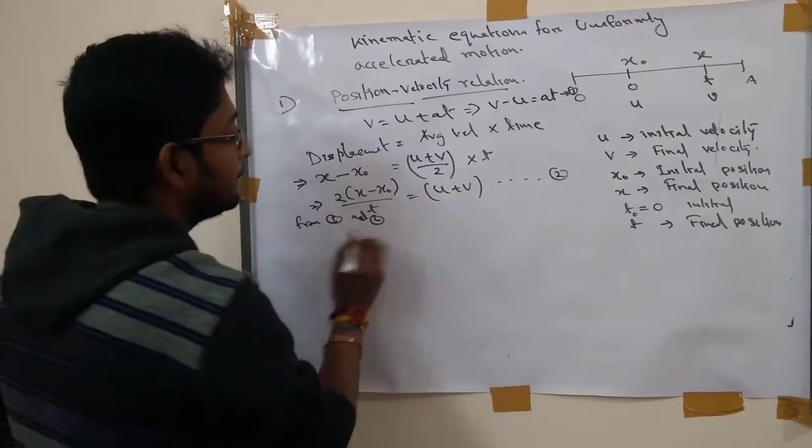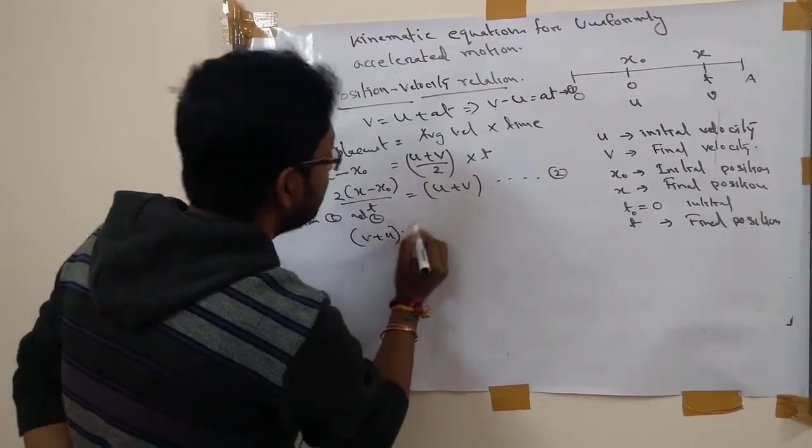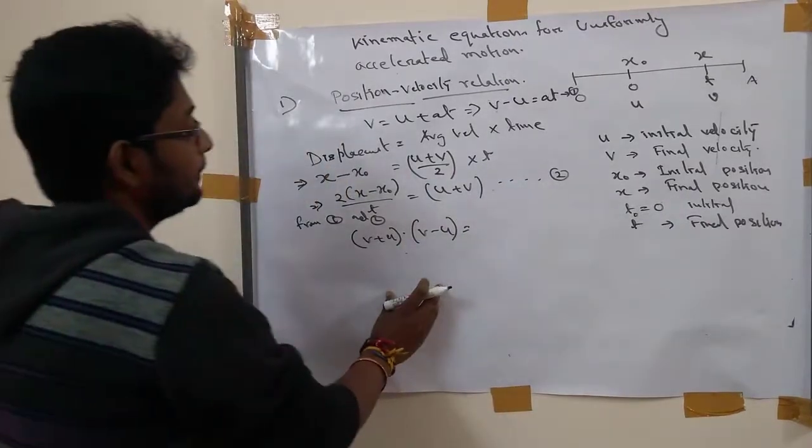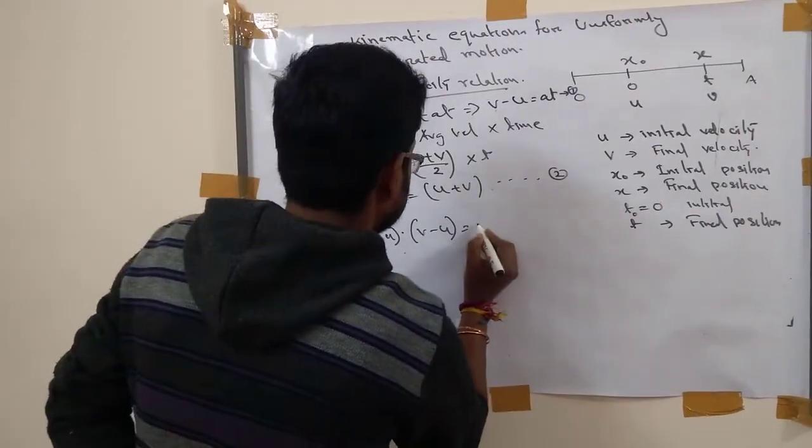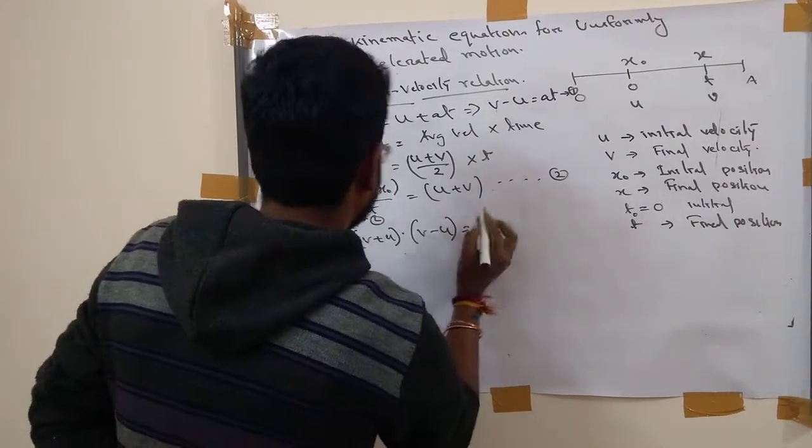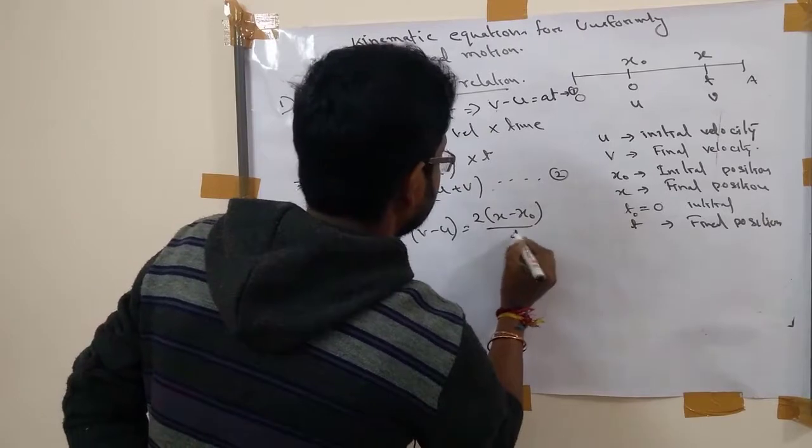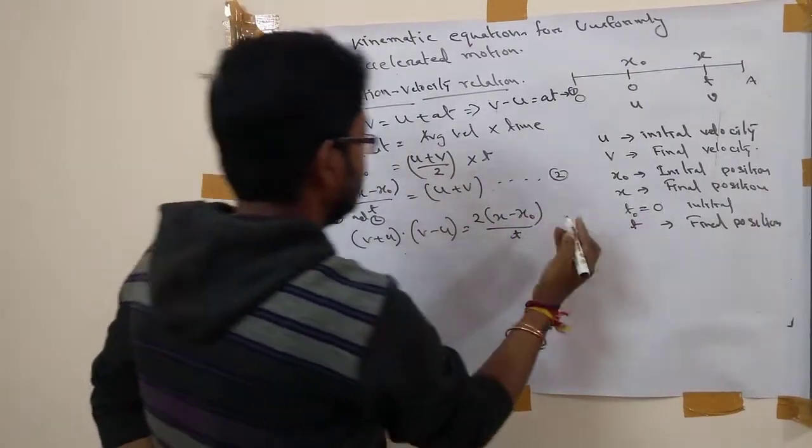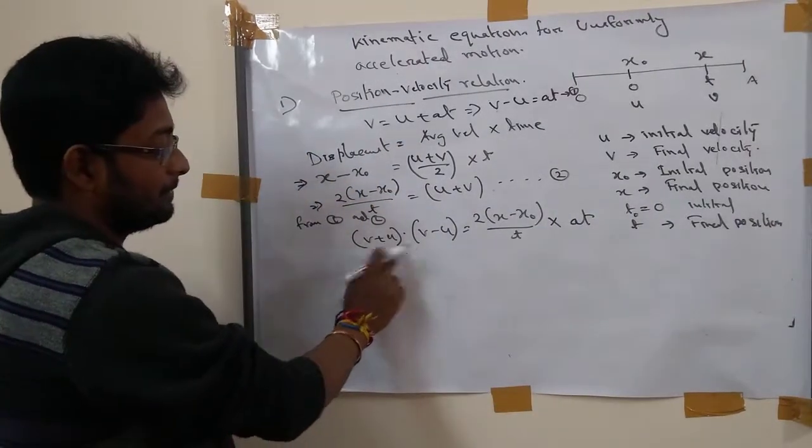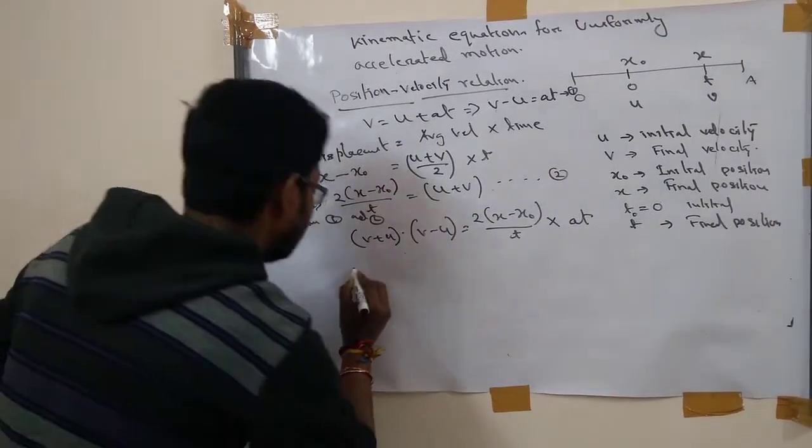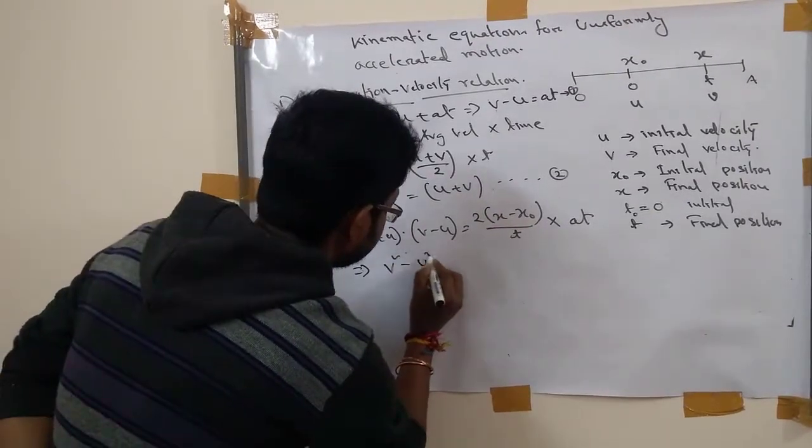We can get v plus u into v minus u. What is the value of v plus u? This is 2 times x minus x naught by t. And v minus u into at. Using the a plus b, a minus b formula, we get v square minus u square.